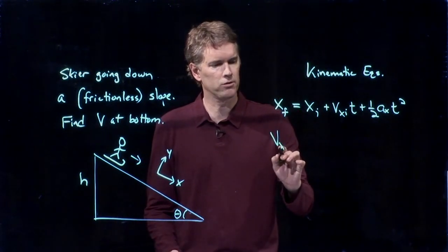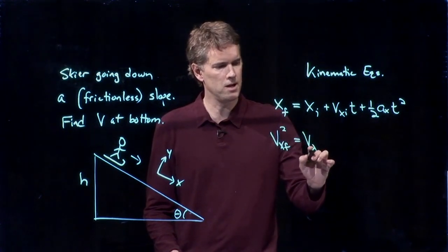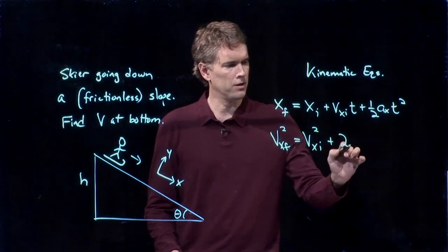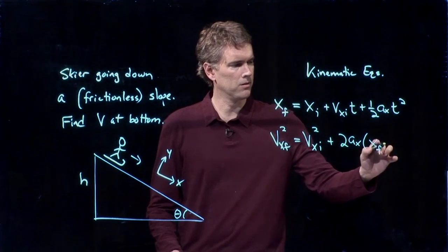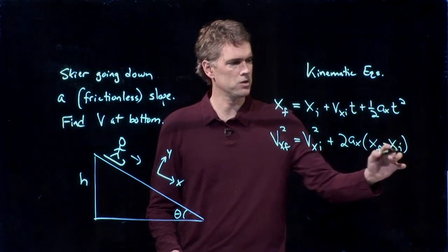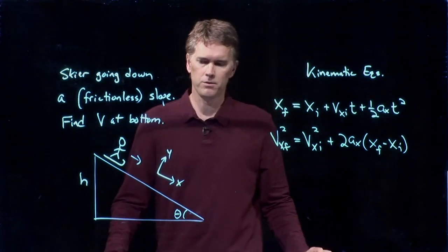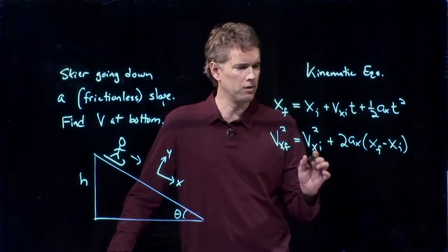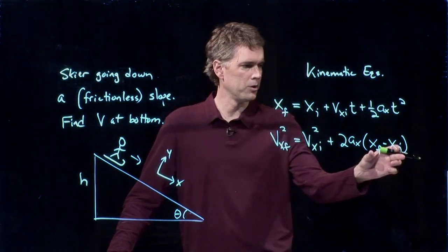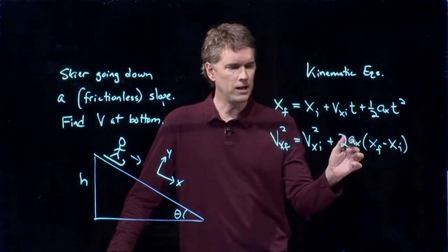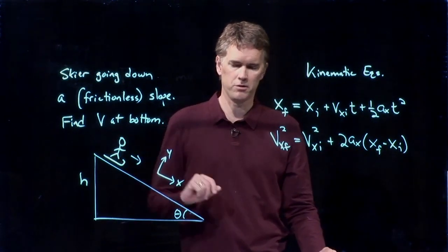v x final squared equals v x initial squared plus 2 a sub x times x final minus x initial. That one looks like it might help us because if you're starting from rest, we know v x initial. If we know how far you go, we know this. A sub x, we might remember what that is for a slope.